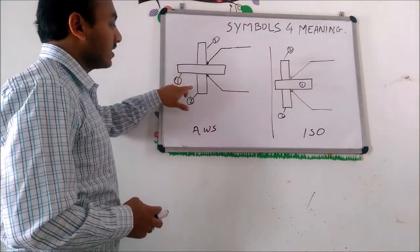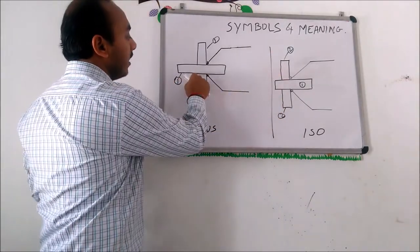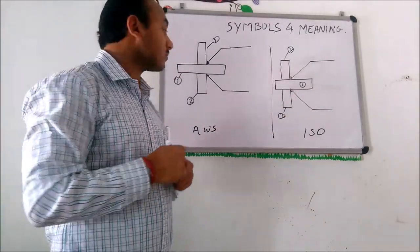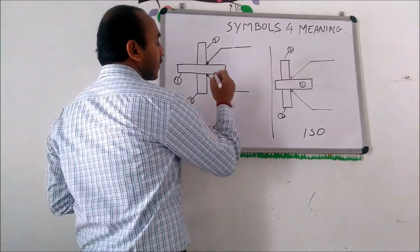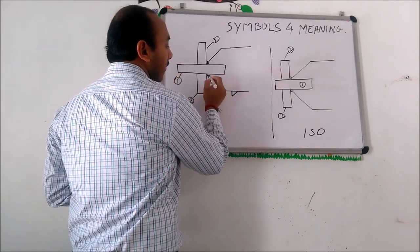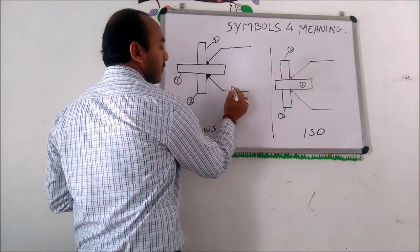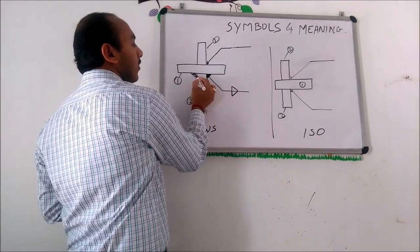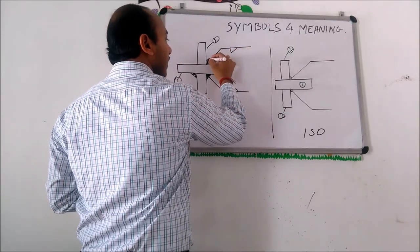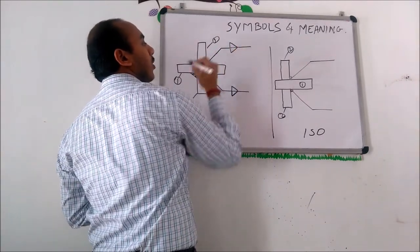Suppose this is component one and this is component two. How do we want to give weld on these corners, and how will it be differentiated in AWS and ISO standard? In AWS standard, giving the weld symbol below the arrow means welding on the arrow side, and giving the weld symbol above the arrow means welding on the other side. So giving the symbol below means welding on its own side, and giving it on top means welding on the other side.